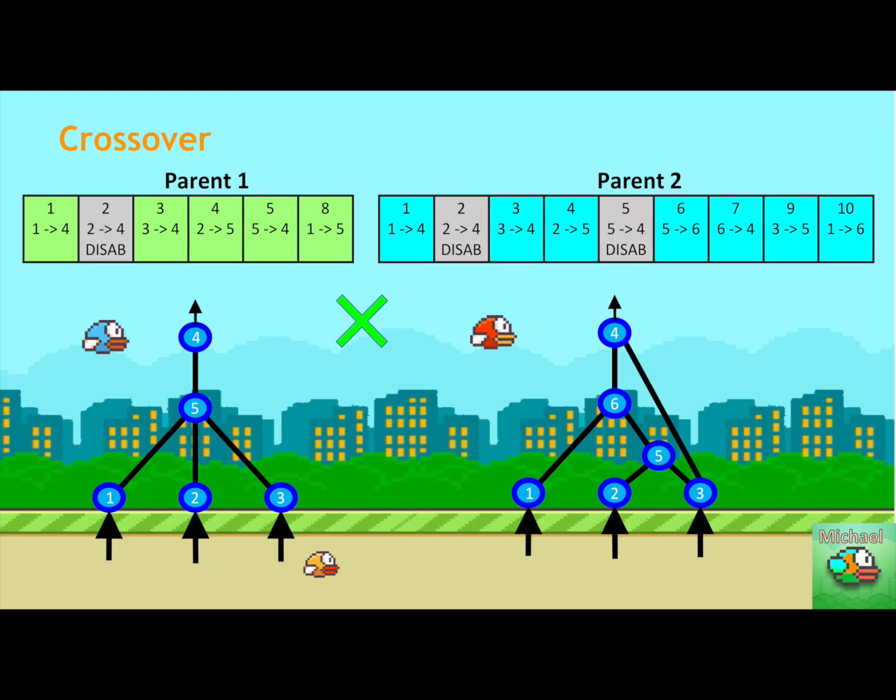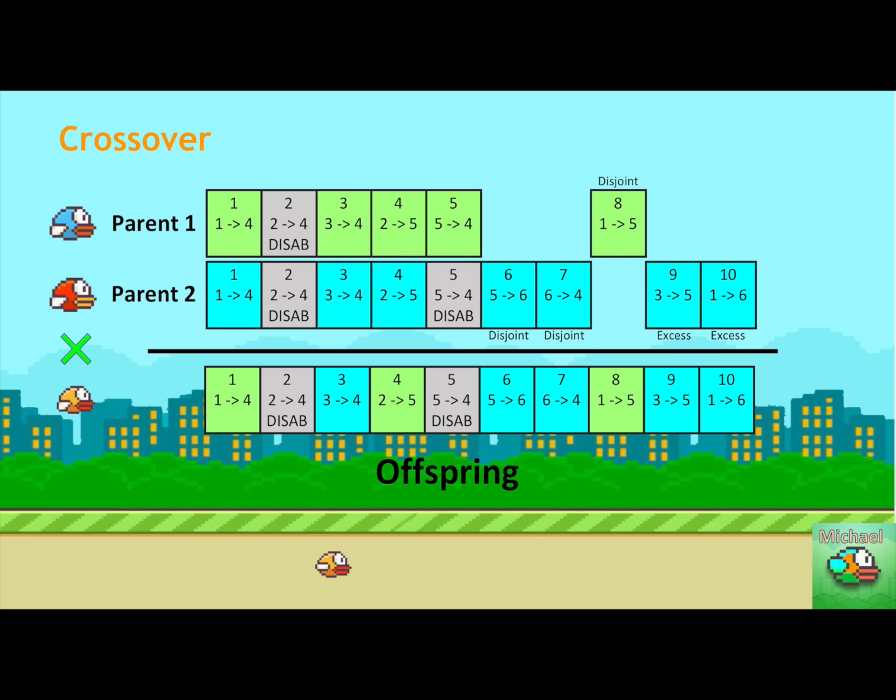So if you were to have two parents with different topologies and you were to cross them over, there's three important categories of genes. One is when they're matching genes. And that's when parent one and parent two share the same innovation number. It's the same connection. The second and third are disjoint and excess genes. Disjoint genes are where one of the parent's genes fall within the range of the innovation number of the other parent, but they don't match. And then excess are where they fall outside of that range. So the scheme that we used was when they match, then the offspring has a 50% chance of inheriting either parent one or parent two's gene. When they're disjoint or excess, the fitter parent passes those on to the offspring. And that's how we are able to carry out the crossover.